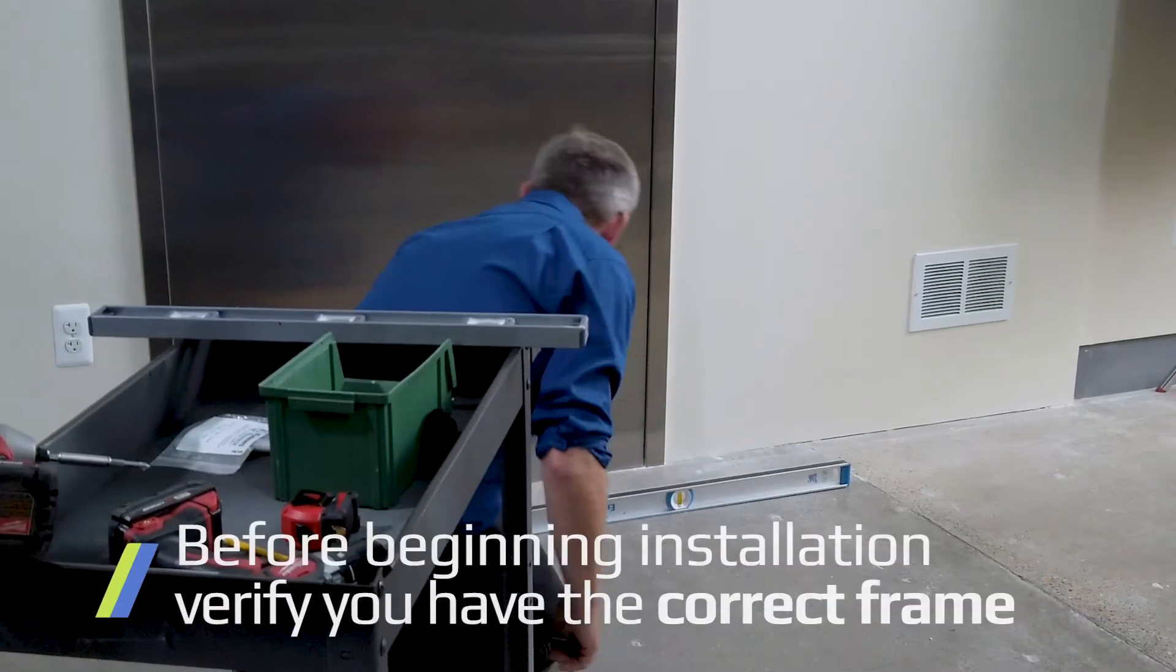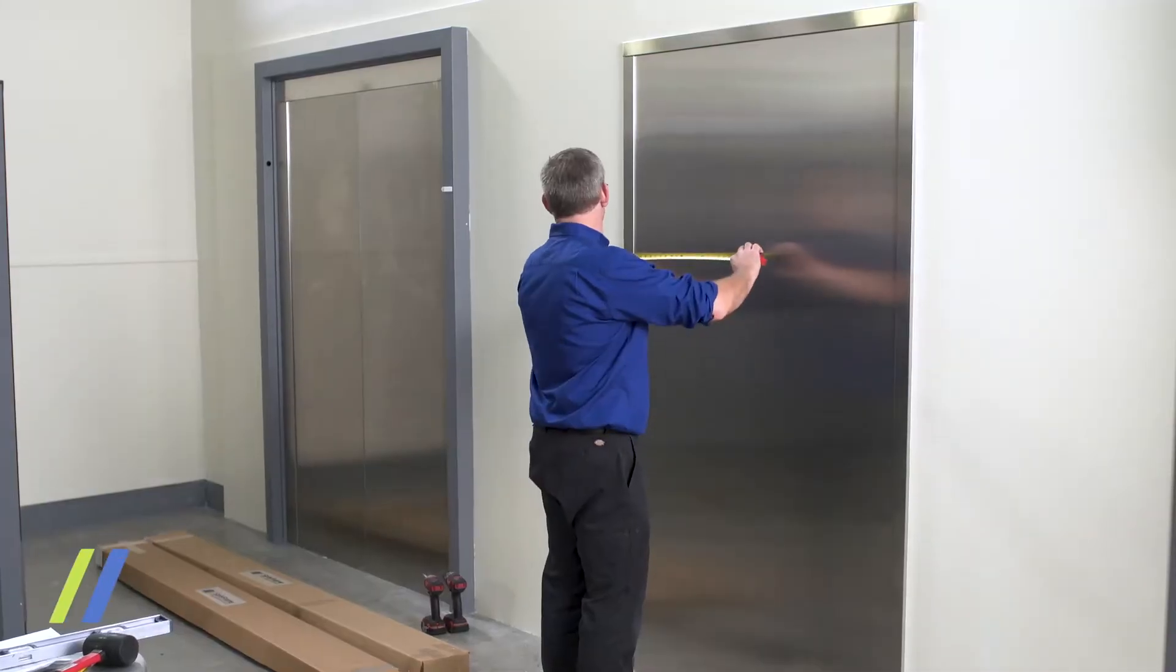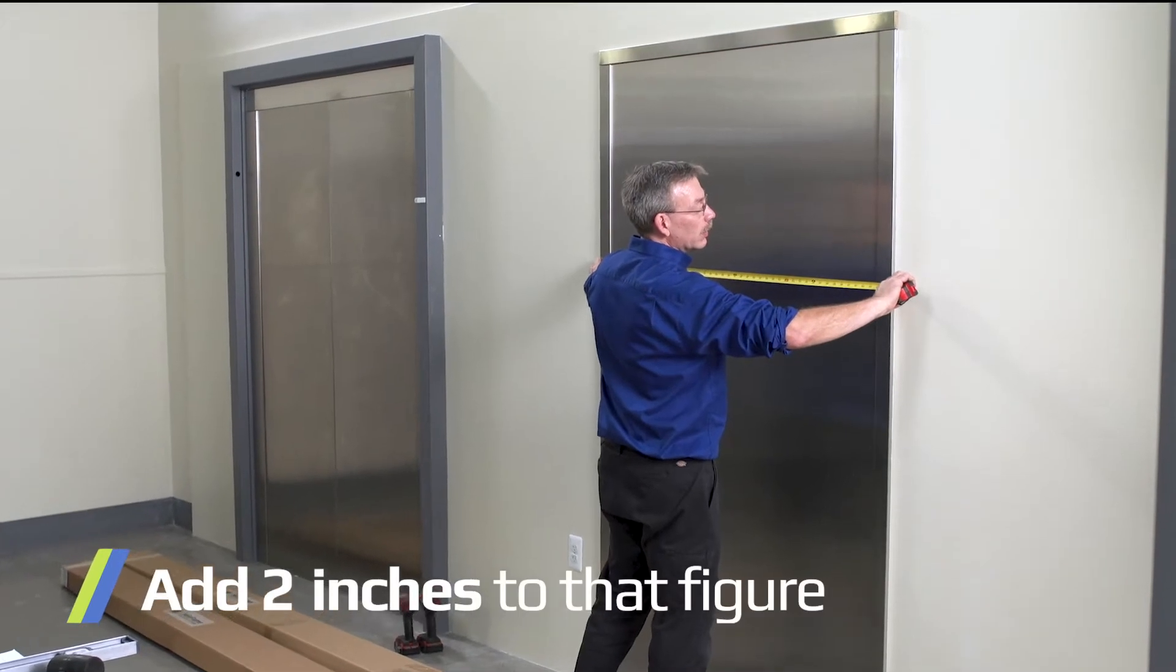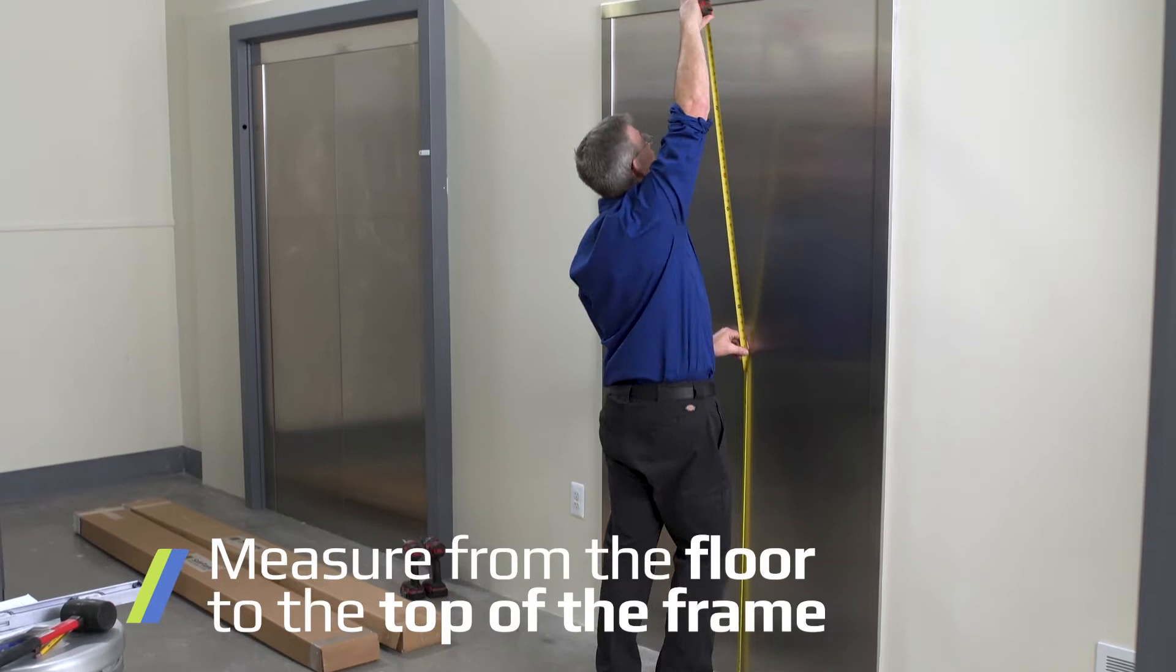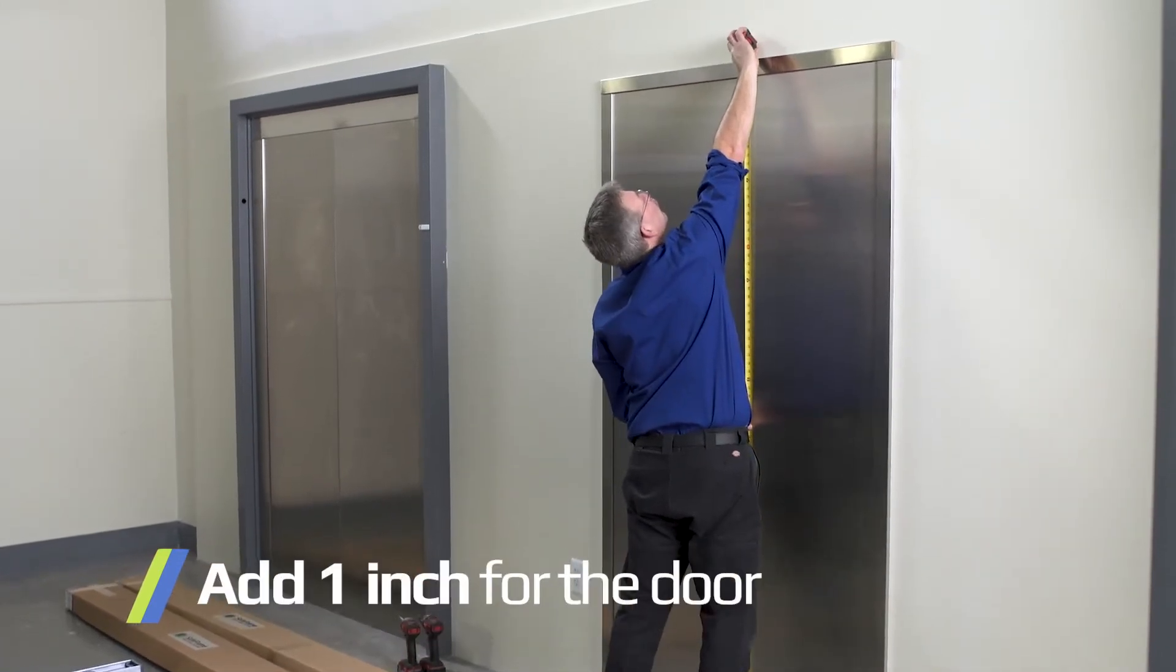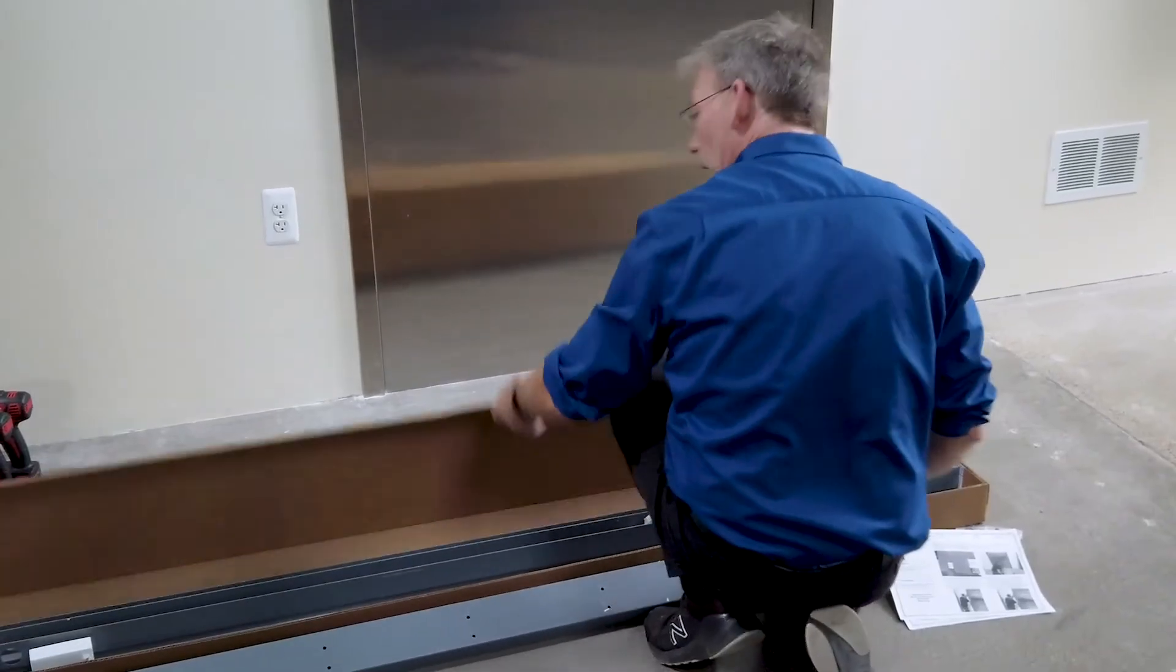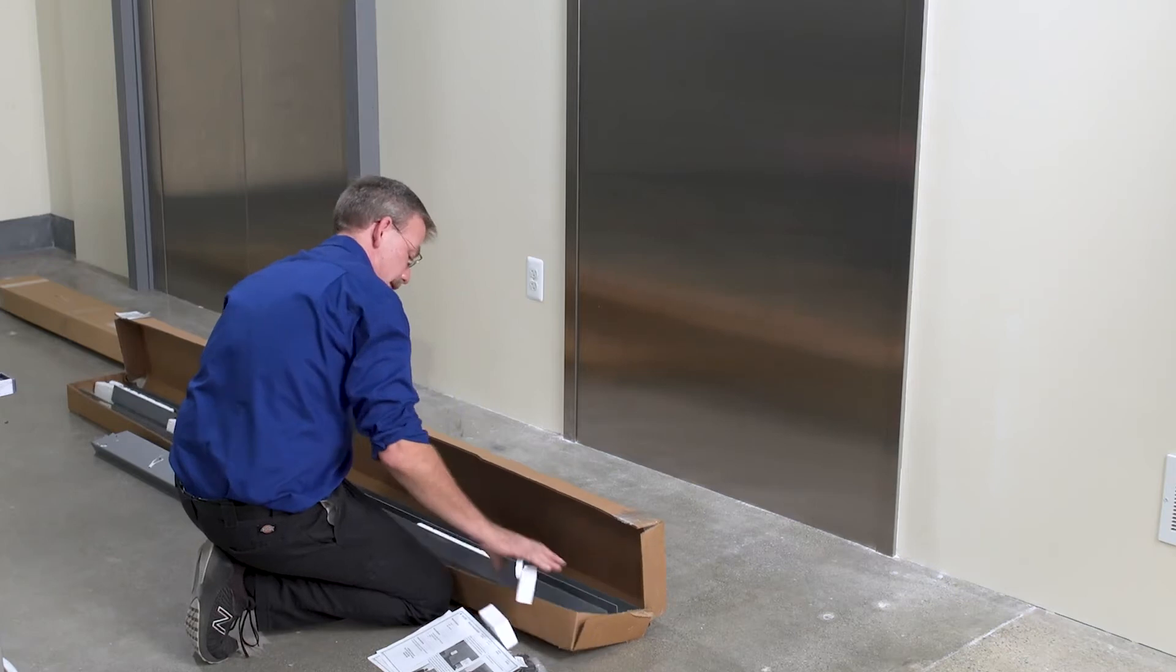Before beginning installation, verify you have the correct frame. Measure overall frame width and add two inches to that figure. Then, measure from the floor to the top of the frame, adding one inch. Make sure these measurements match the size on the label. Once the size has been verified, open the sub buck box.